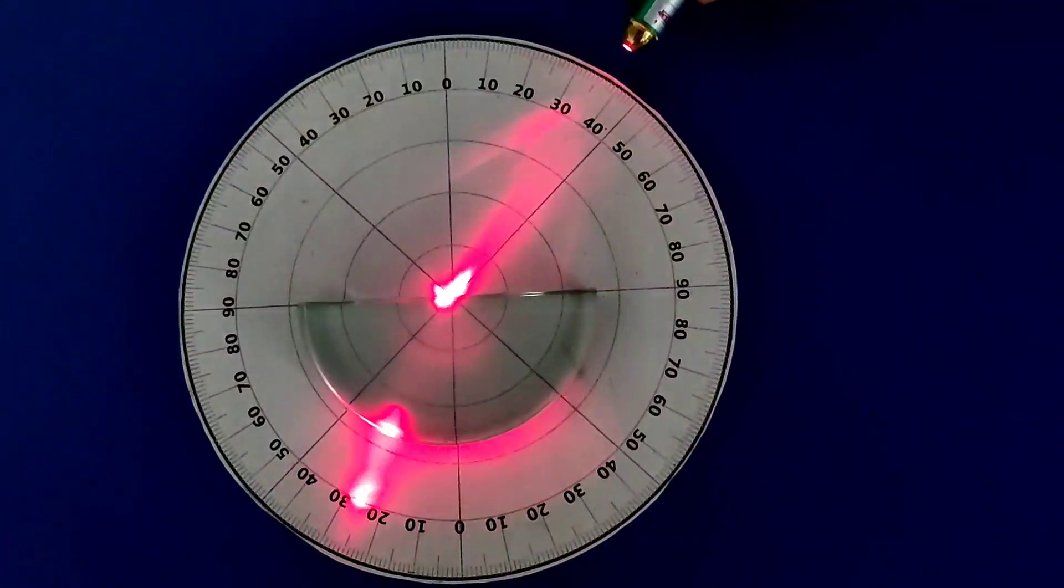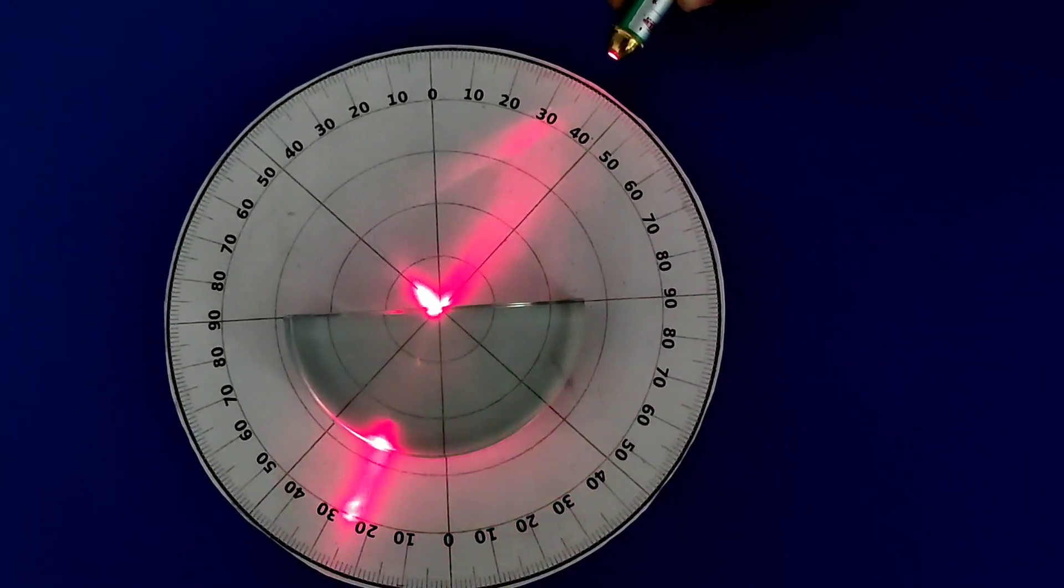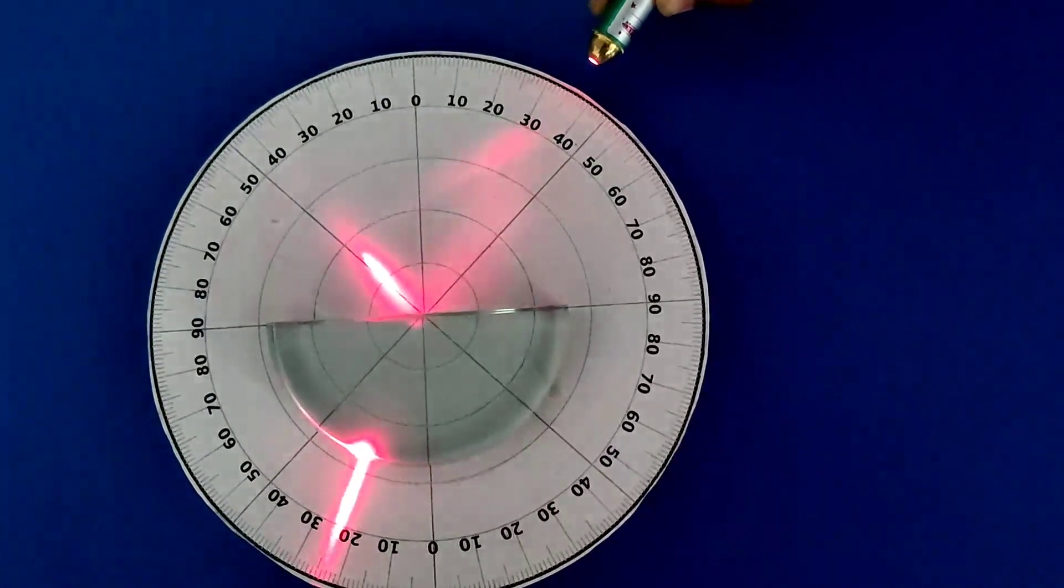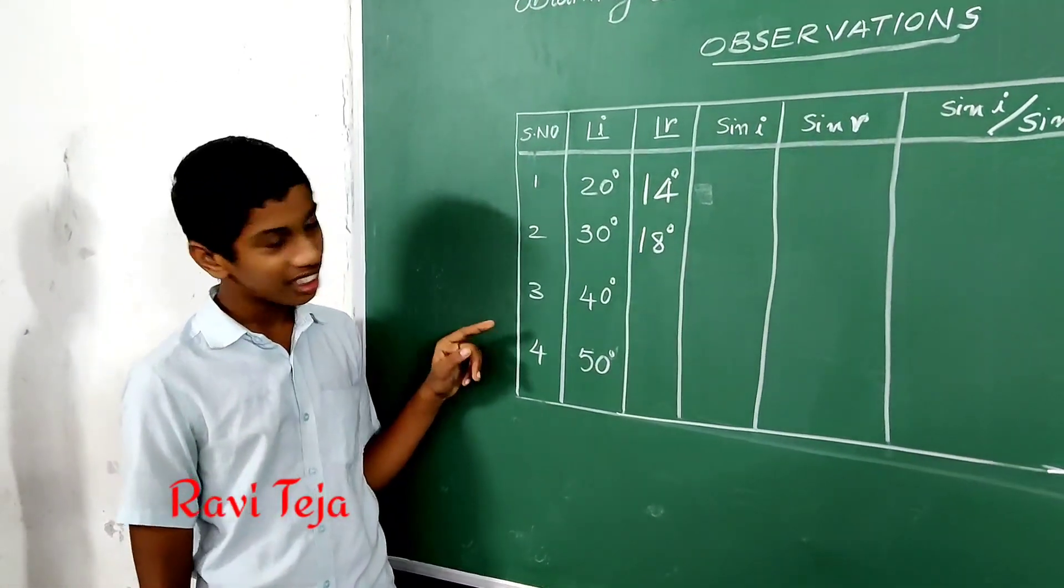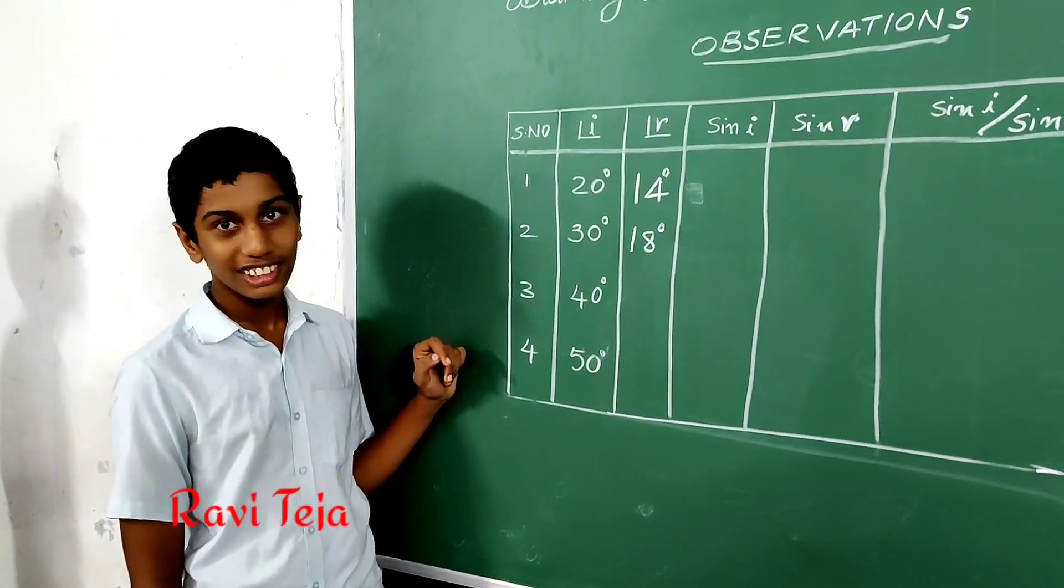Angle of refraction 26 degrees for 40 degrees. Here angle of refraction for 40 degrees is 26 degrees.